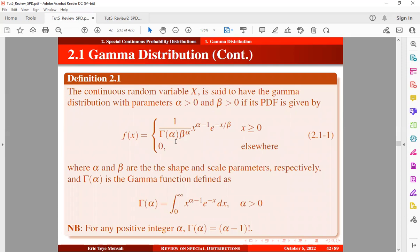So changing the value of alpha will change the shape of the distribution. Changing the value of beta corresponds to changing the unit of measurement, such as changing from meters to centimeters or seconds to minutes.